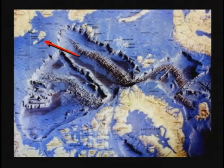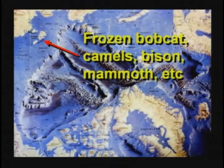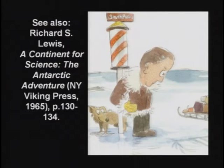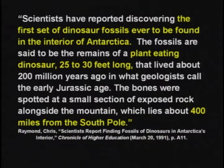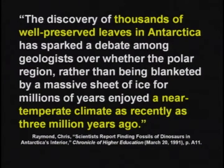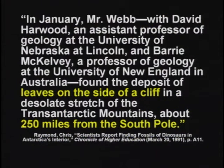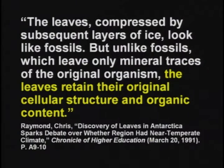There's an island up there called the New Siberian Islands off the coast of Russia. On those New Siberian Islands, they find frozen bobcats, frozen lynx, frozen camels. When they drill down through the ice at the South Pole, they find coal under the ice. I would like to point out there are no trees in Antarctica — zero. Admiral Byrd went down there and said they saw frozen palm trees or palm leaves near the South Pole. Scientists have discovered all sorts of frozen leaves, even dinosaur fossils, plant-eating dinosaurs, near the South Pole. Thousands of well-preserved leaves found in Antarctica — leaves on the side of a cliff 250 miles from the South Pole — still retain their original cellular structure and organic content. They're not petrified; they're preserved.